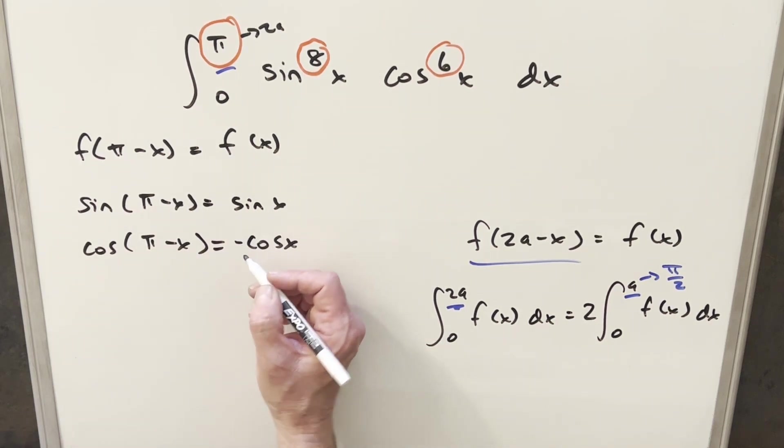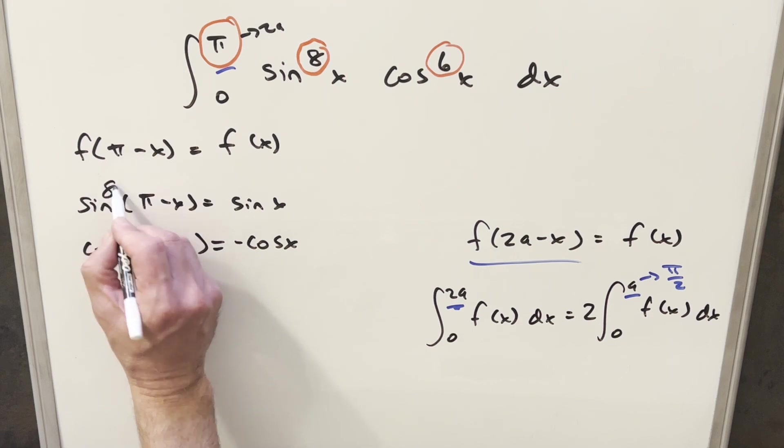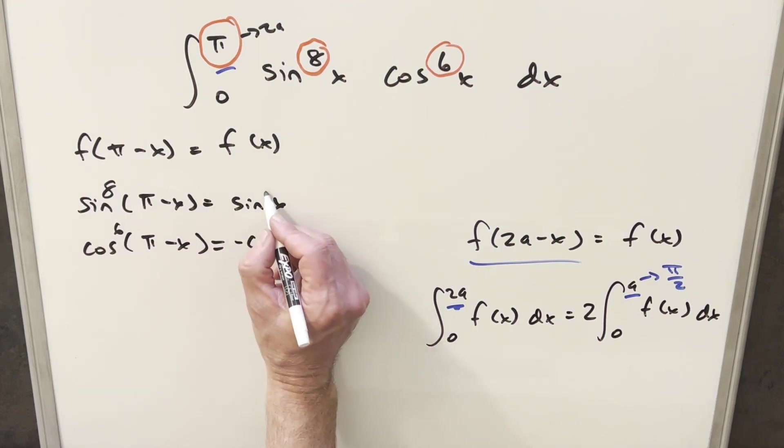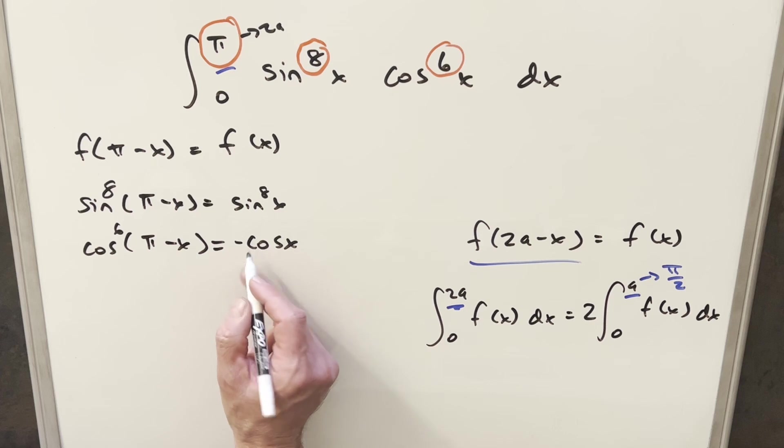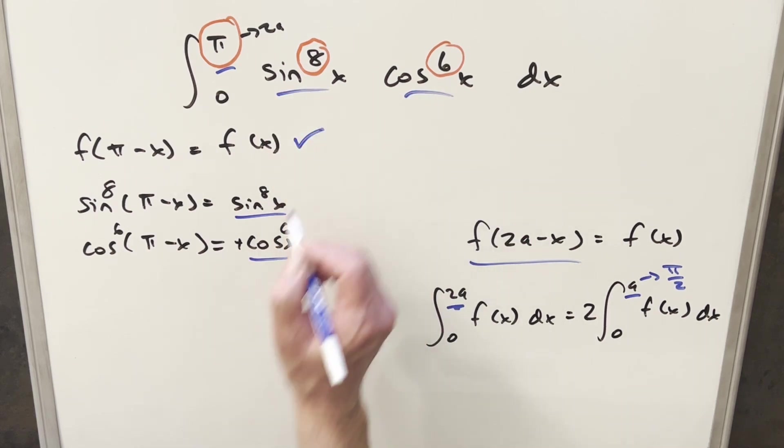cosine pi minus x is going to be minus cosine x. But when we raise this to the 8th power and this to the 6th power, this just becomes sine 8x. And when we raise this to an even power, the minus sign goes away. So what we have here is exactly what we have in our integral. So this condition is true.